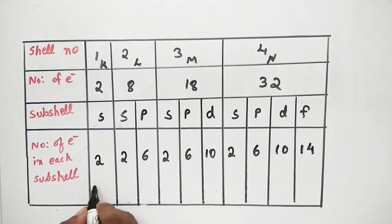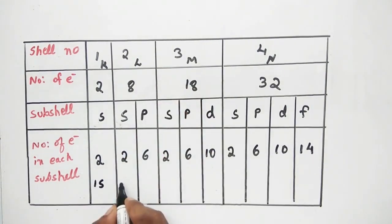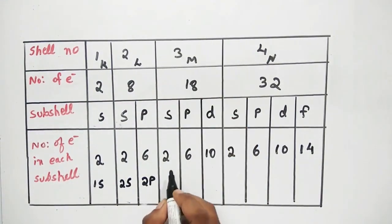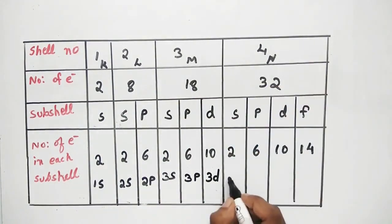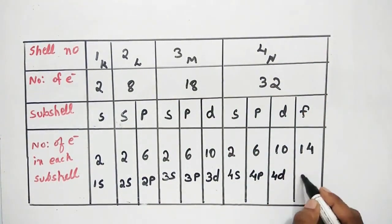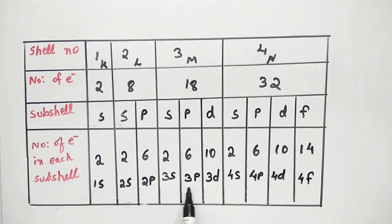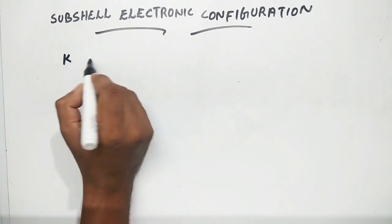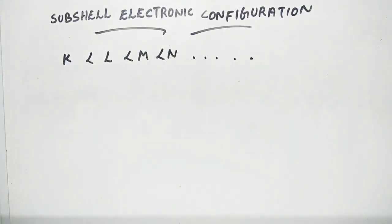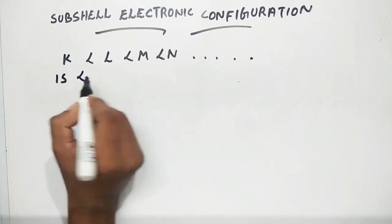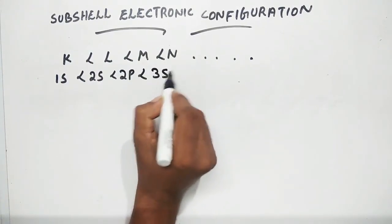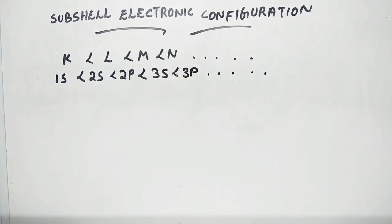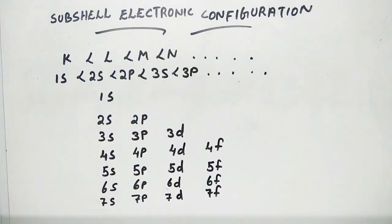Now we have subshells addressed as 1s, 2s, 2p; then 3s, 3p, and 3d; then 4s, 4p, 4d, and 4f. The subshells fill in increasing order of energy.